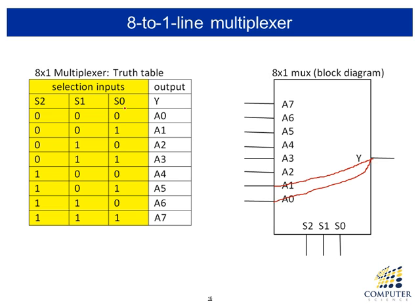Here is a simplified truth table for that. Depending on the selection inputs, the output is directly forwarded from one of the inputs. For example, if the selection input is zero-one-one, the binary number one-one is three, so input three is directly connected to the output.